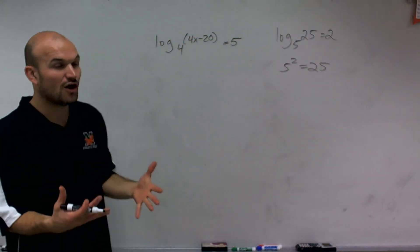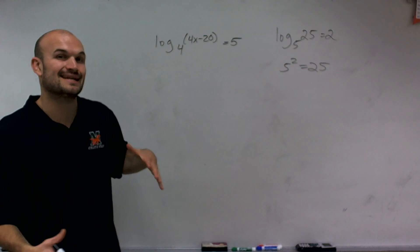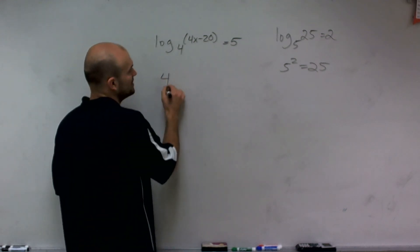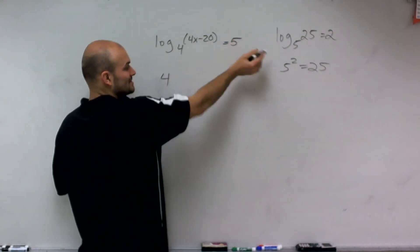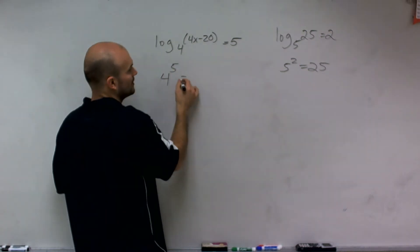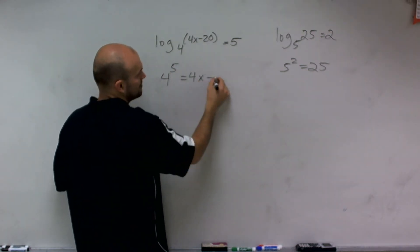So in this case, to solve this, what I'm going to do is rewrite this in exponential form. So therefore, rewriting in exponential form like I did with this logarithm, I have 4 to the fifth power equals 4x minus 20.